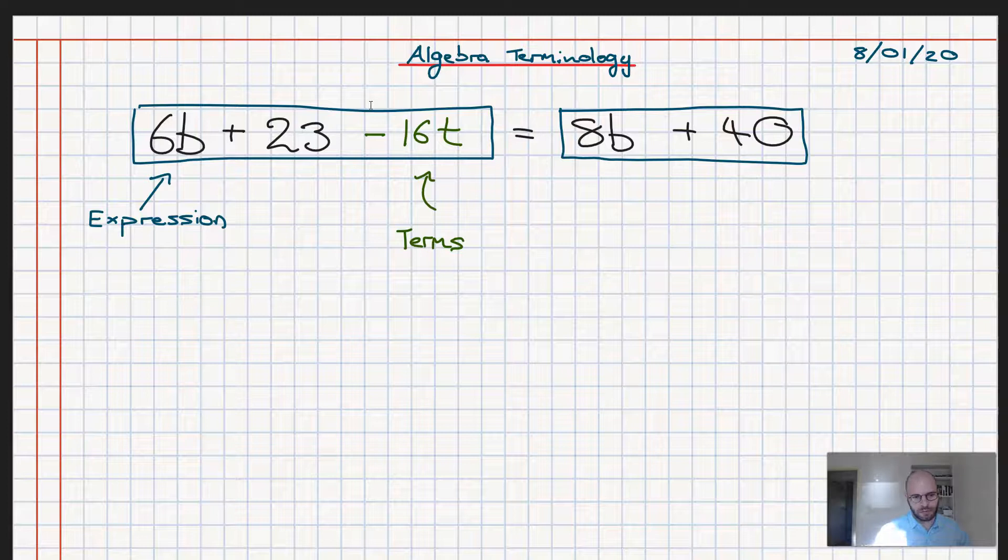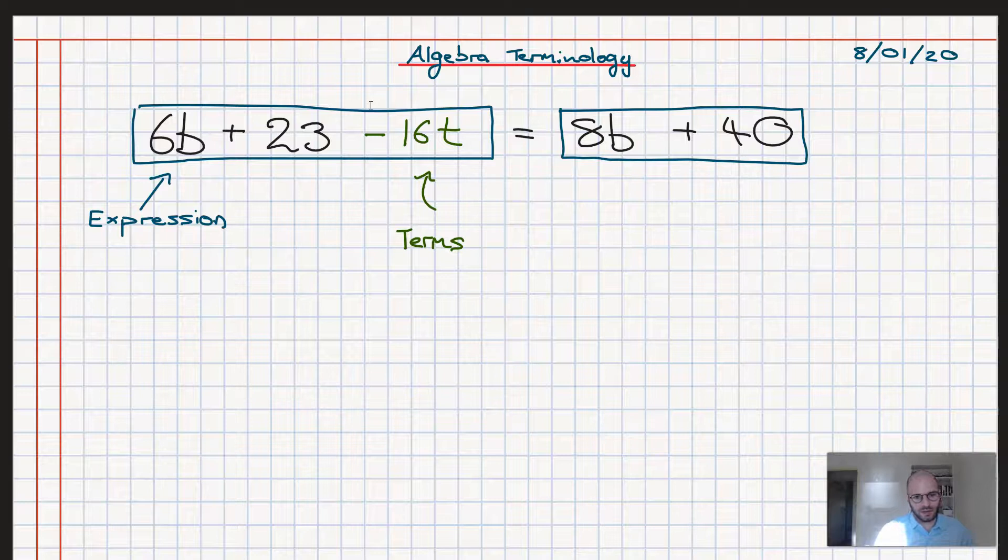Going even further and being more explicit, we ask ourselves, what are terms made of? And to answer that question, there are actually two different types of terms. So the first type of term involves a number and a letter grouped together. And the second type of term involves just a number by itself.